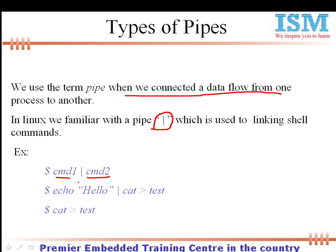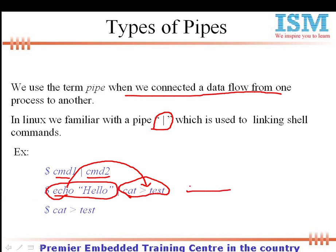For example, `ls | more` is used to get data page by page. Likewise, `echo hello` would print hello on screen — by linking that with `cat > test` the output of the echo command is fed as input for the cat command, and together these commands store hello into a file named test. So we use this pipe vertical line to pass the output of one command as input for the next command.